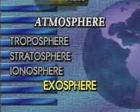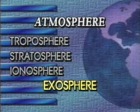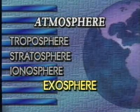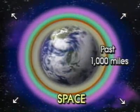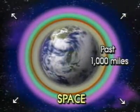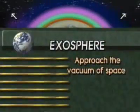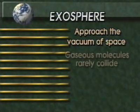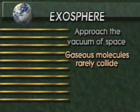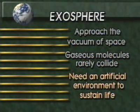The final major division of the atmosphere is the exosphere. It extends from 600 to 1,000 miles. Past 1,000 miles, we are officially in space. As we ascend in the exosphere, we gradually approach the vacuum of space. There is so little pressure and density that gaseous molecules rarely collide, and an artificial environment to sustain life is required.